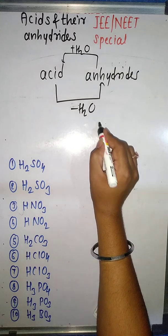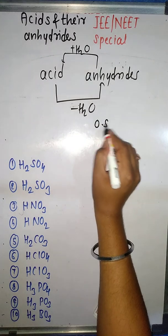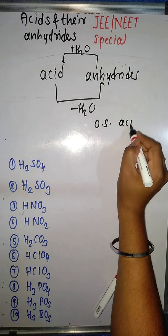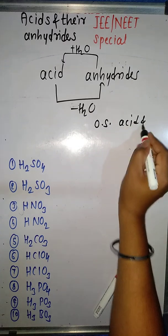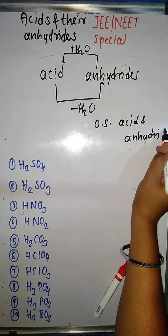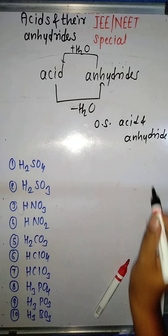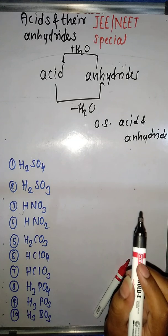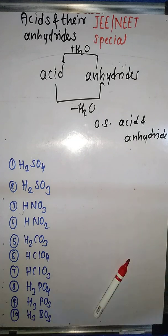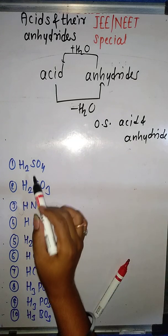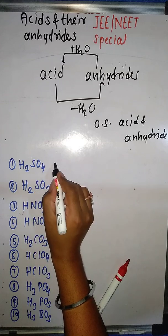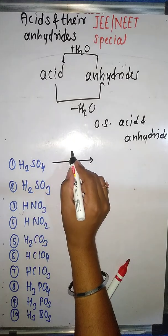One important thing to remember: the oxidation state of the element in the acid and its anhydride is always the same. The oxidation state of the element in the acid and in the anhydride is always same.